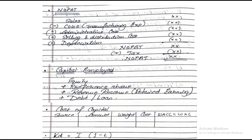First, always find Net Operating Profit After Tax. The format is: Sales, less manufacturing expense, less administrative expense, less selling and distribution expense, less depreciation — this gives you Net Operating Profit Before Tax. Less tax gives you Net Operating Profit After Tax. That is the very first value you need to find.